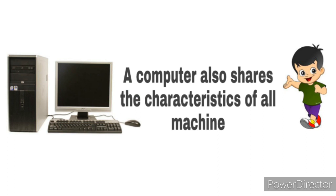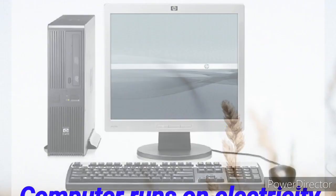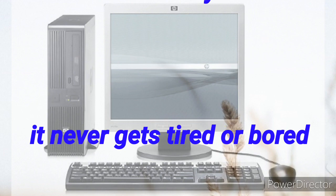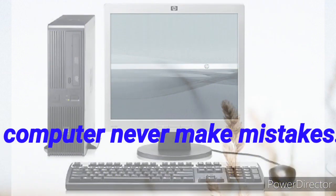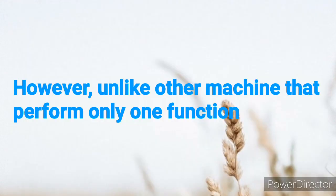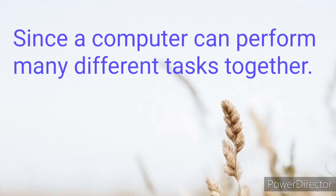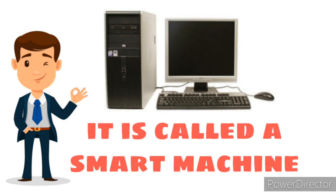A computer also shares the characteristics of all machines. A computer runs on electricity, works very fast, never gets tired or bored, and never makes mistakes. However, unlike other machines that perform only one function, a computer can be used for typing, drawing, playing games, listening to music, and watching movies. Since a computer can perform many different tasks, it is called a smart machine.